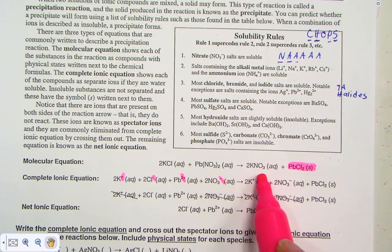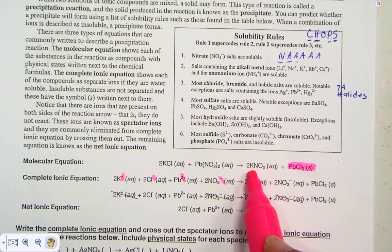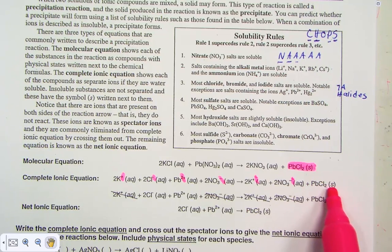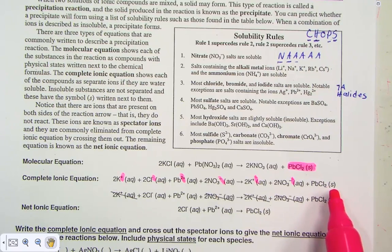On the product side, aqueous potassium nitrate with the charges, and the solid is left together. PbCl2 is a solid non-electrolyte.